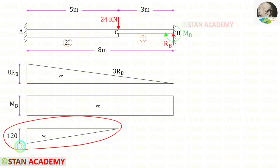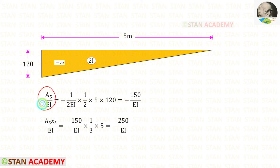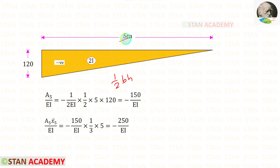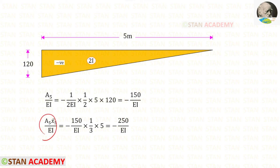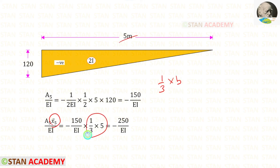Now let us take this triangle and keep it as number 5. The moment of inertia is 2I, so we use 2EI. Using the triangle area formula (half × base × height) with breadth 5 and height 120, Area 5 upon EI = −150 upon EI. For Area 5 × x̄5 upon EI, the centroid is (1/3) into breadth, so (1/3)×5. Finally we get −250 upon EI.